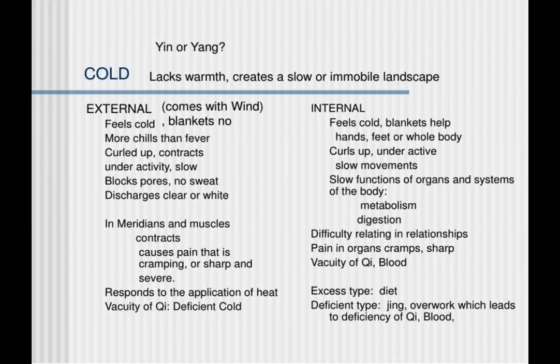Then there is an excess type caused by diet, and a deficient type caused by genes and overwork, which leads to deficiency of chi or blood.